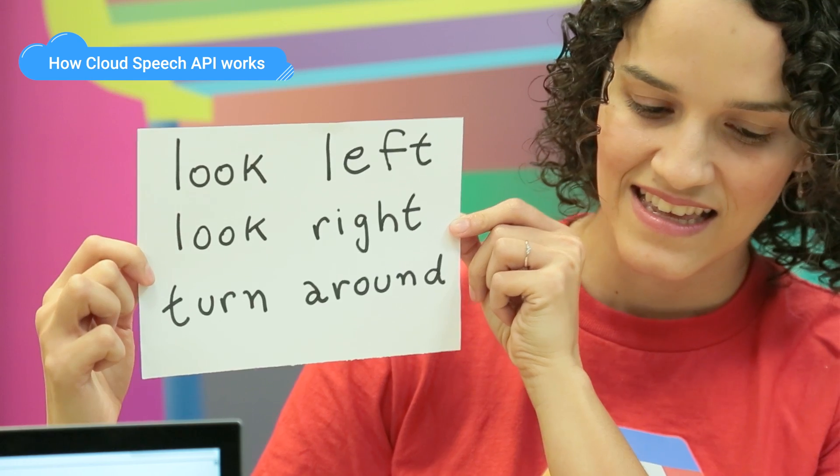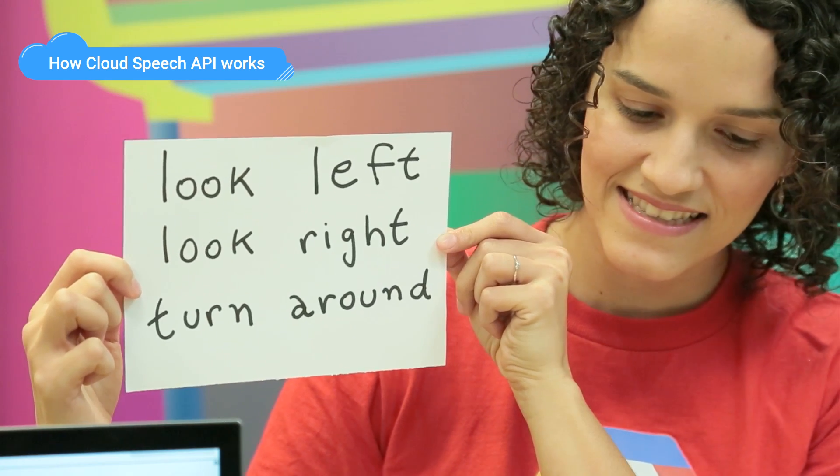You can combine Speech API with the other Google Cloud APIs. In our bot, we have combined it with Vision API to run OCR on an image of text. Can you read these?